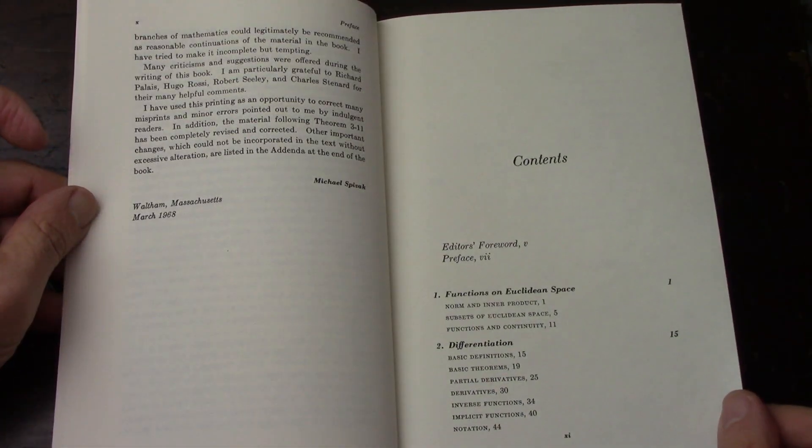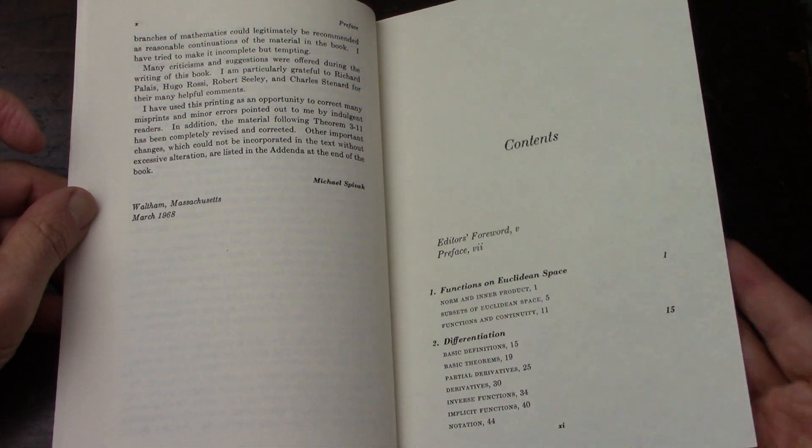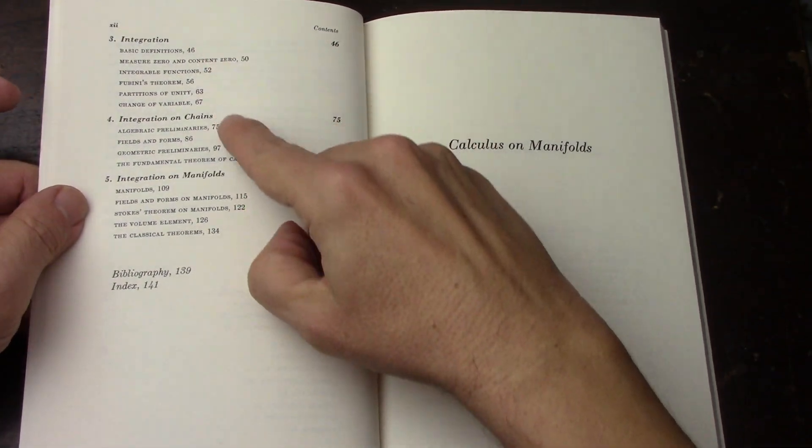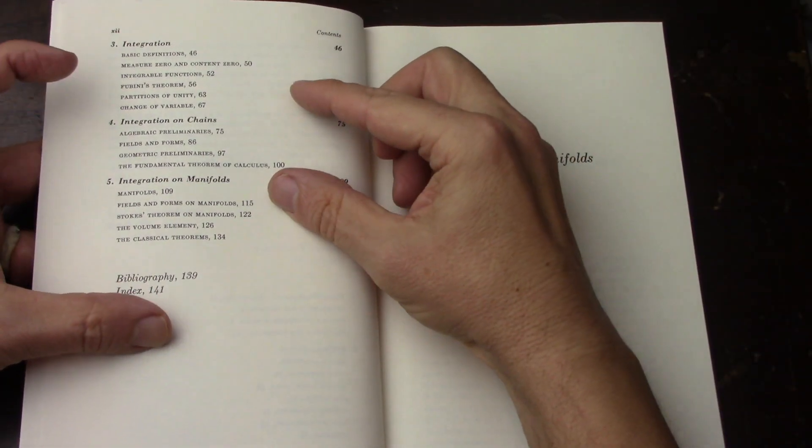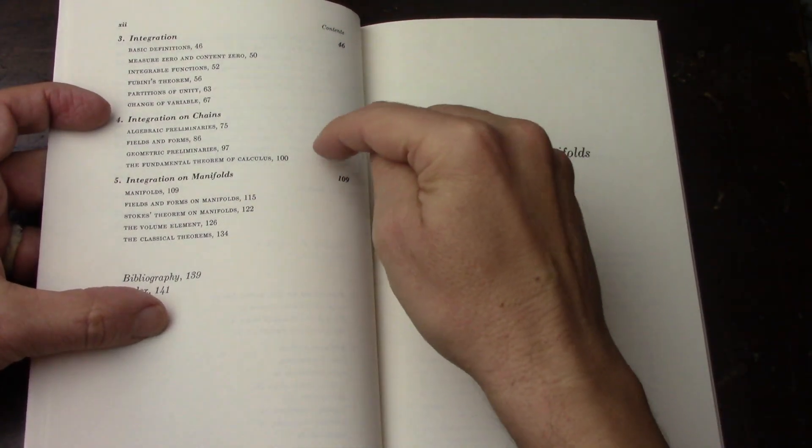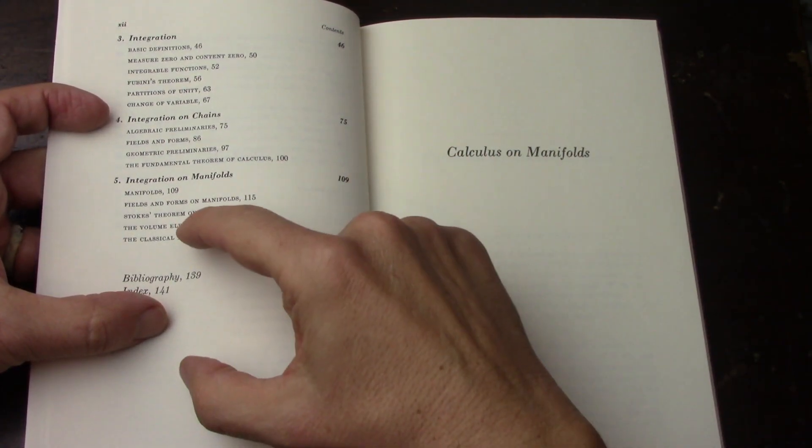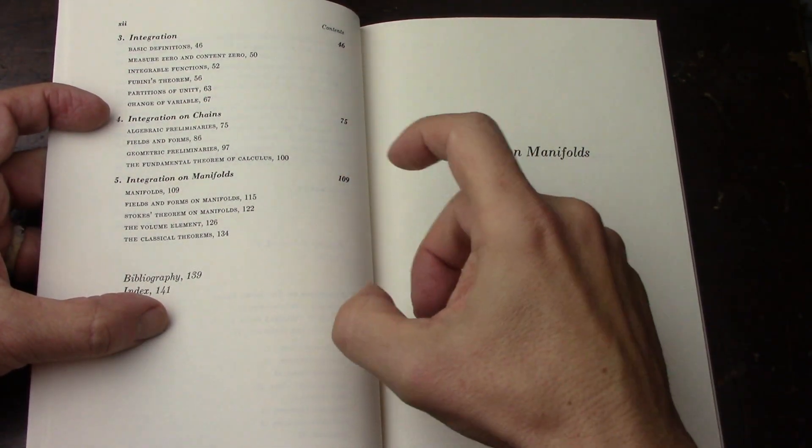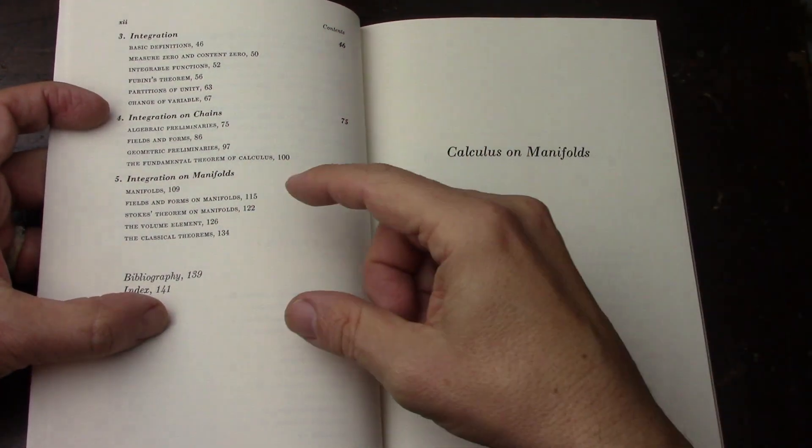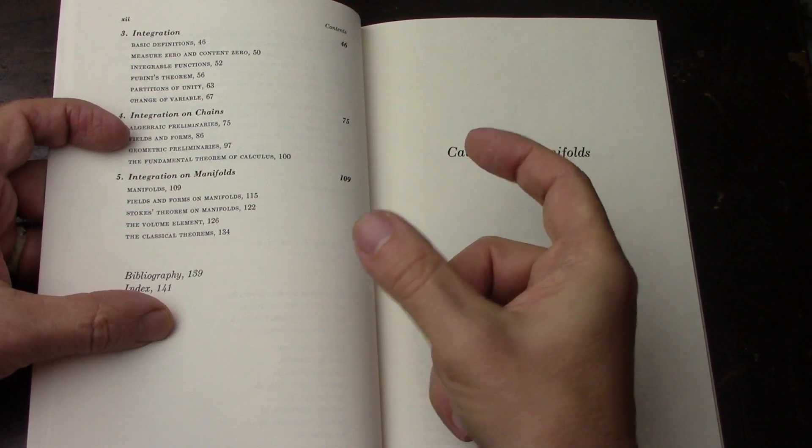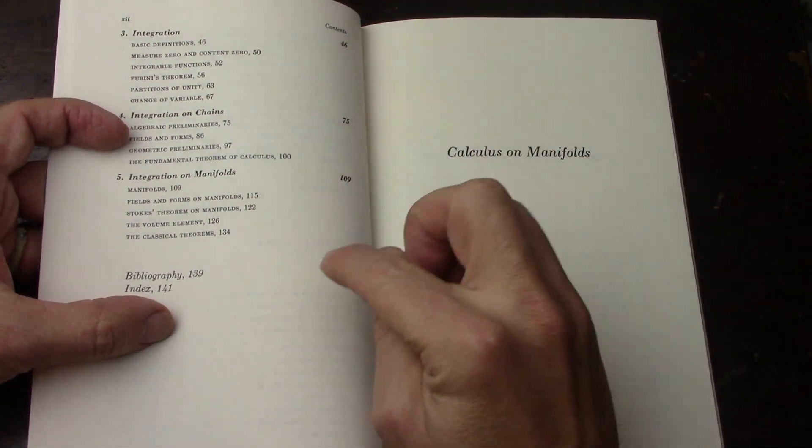That's what really this book is about. And so, it's got Euclidean space differentiation. I went too fast through that. Integration. Integration on chains. Hello, topology. So yeah. By the time I do this book, I would have done Munkres's topology. And one, two, or three differential geometry books. And a little revisit to complex analysis.